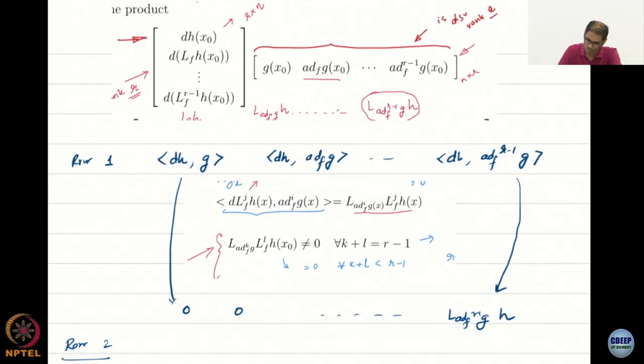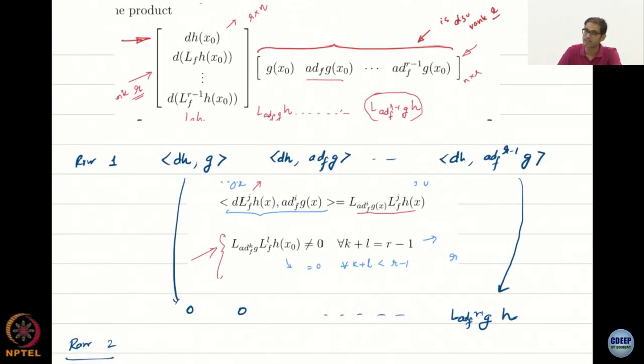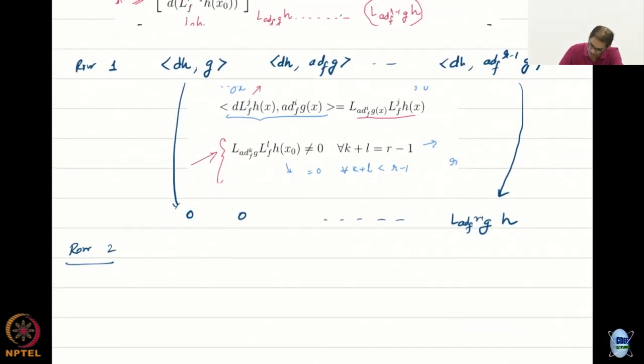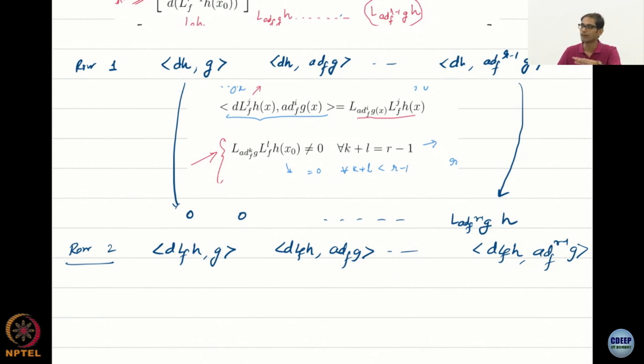Row 2. Let us look at row 2. What happens to row 2? h gets replaced by L_f h. That is it. Everything else is the same. So what is it? Inner product d L_f h g, inner product d L_f h add_f g, all the way inner product d L_f h add_f^(r-1) g. Great. First term, what is j? 1. Remember, in every row, j remains fixed. Excellent. j is fixed now, j is 1 for this row. i is going to change. i is 0. 1 plus 0 equals 1, less than r minus 1. So inner product has to be zero by this. Again, second term, 1 and 1, 2.